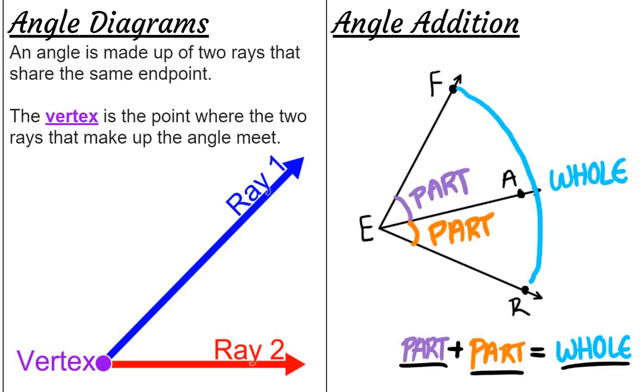The vertex is the point part of the angle where the two rays meet up. For basic angle addition, remember part plus part equals whole. And that is our conclusion to naming angles in diagrams and basic angle addition.